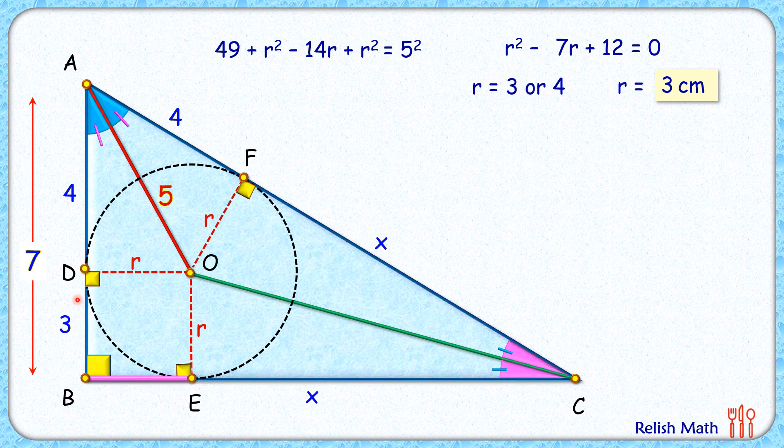Now in this full triangle ABC, applying Pythagorean theorem, we'll get 7² + (3 + x)² = (4 + x)². Both sides, opening up the brackets, we'll get the equation in this form. So LHS and RHS, x² will get cancelled down.